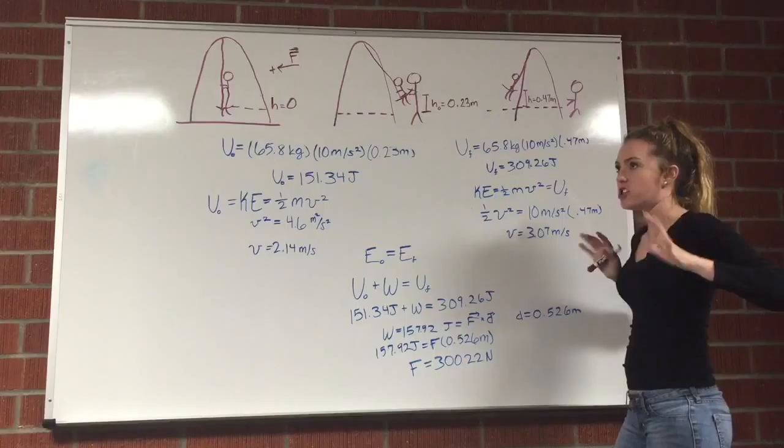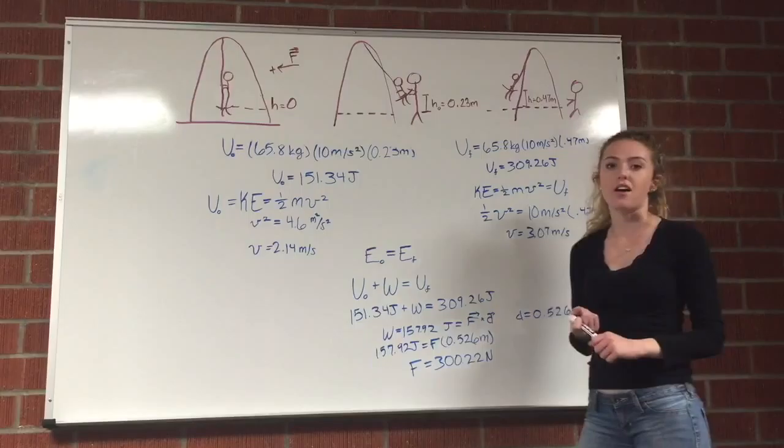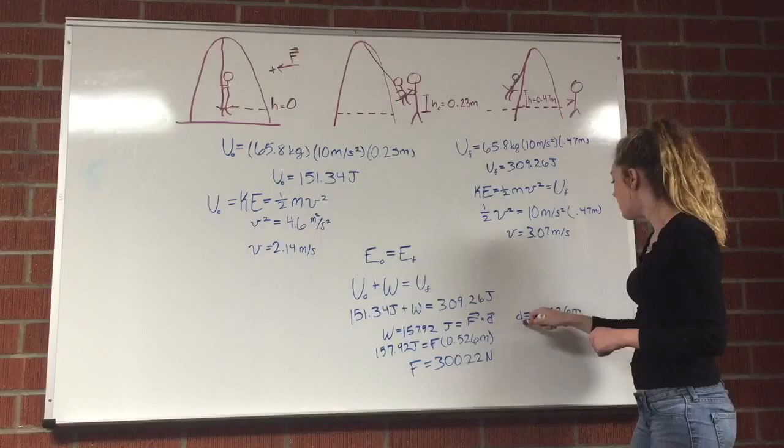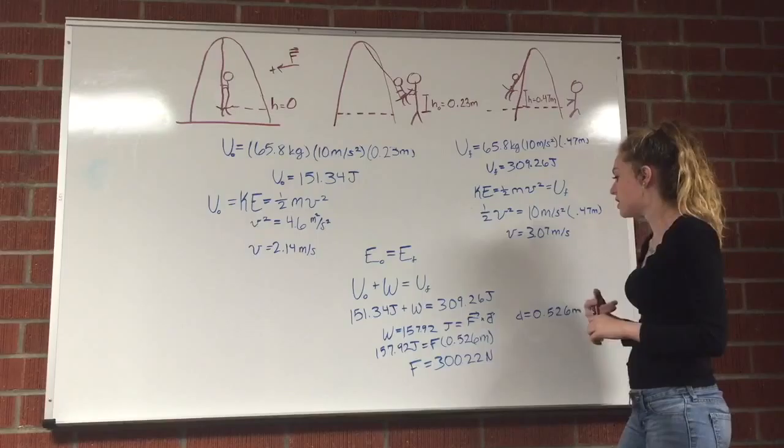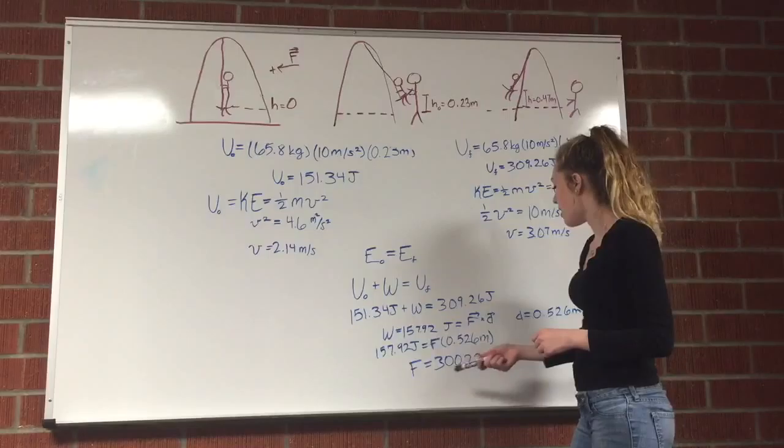We know that work equals force times distance, and the distance that Jackie was pushing on Cassie was 0.526 meters, which we found from Tracker, just like the two heights. So the distance she was pushing before letting go was 0.526 meters.